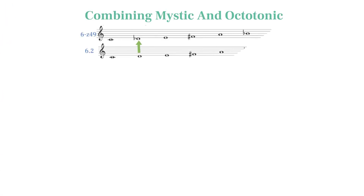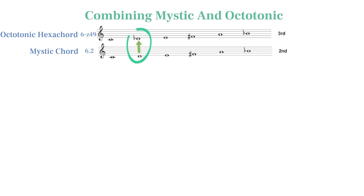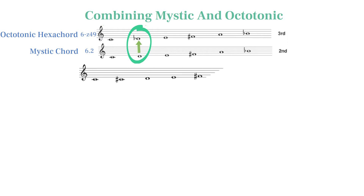Last episode, we learned about how Scriabin's octatonic hexachord is just like the mystic chord, with a lowered second-scale degree. We can combine these two sets by including both pitches to get an important superset: set 726.